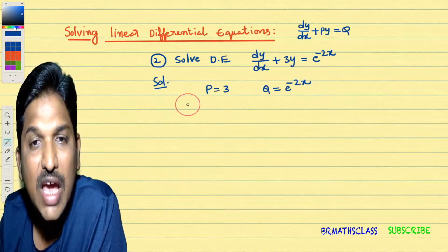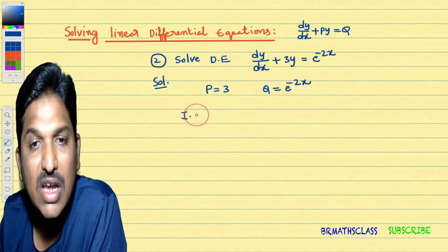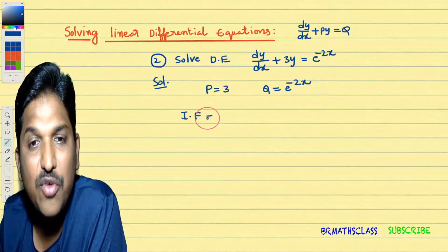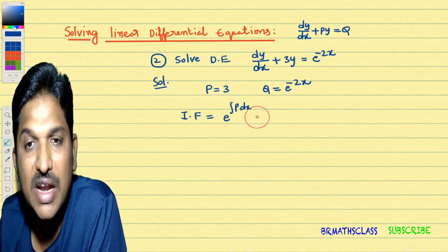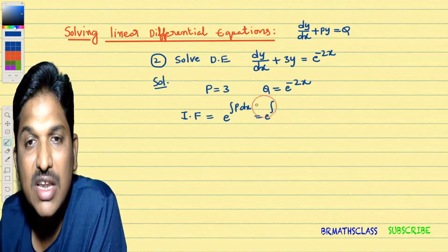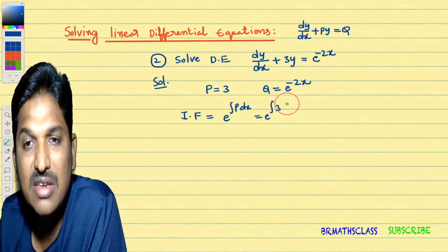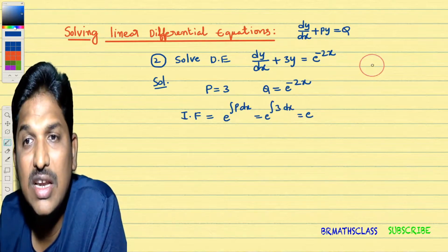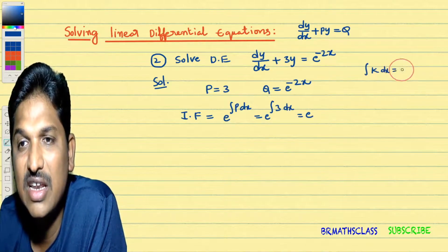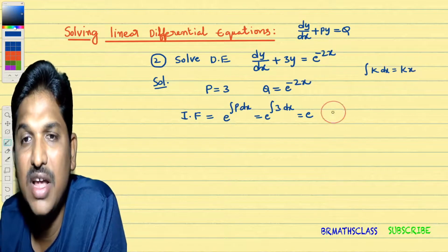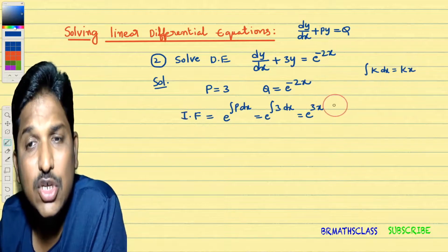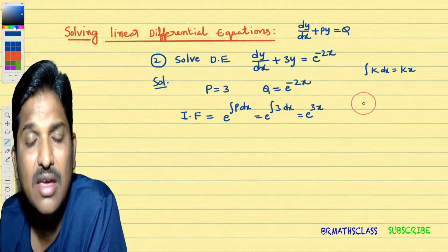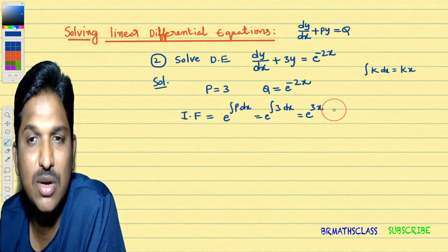Step 2: calculate the integrating factor. The formula to calculate the integrating factor is e power integral of p dx. That equals e power integral of 3 dx. We know that integral of k dx is kx, so integral of 3 dx is 3x. While calculating the integrating factor, you don't write plus c. So the integrating factor is e power 3x. Step 1 and step 2 are completed.